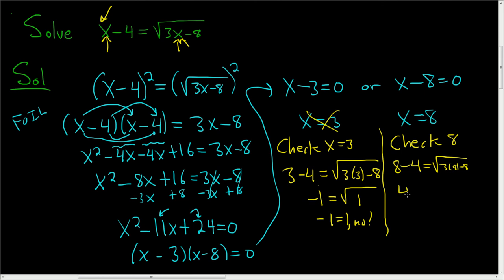8 minus 4 is 4. And over here we get 24 minus 8, which is 16. So 4 is equal to 4. Yes, it works. So the final answer is x equals 8.